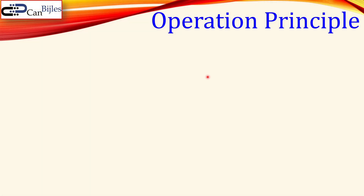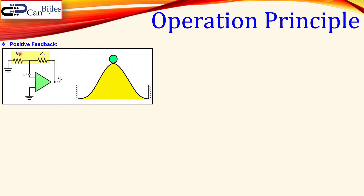Before we jump into our example, let's briefly discuss the operation principle of this Schmitt trigger. We will have a positive feedback, and the positive feedback in general is given by this circuit. We have the positive feedback configuration using a simple voltage divider with two resistors. This is our output voltage VO, and we have both inputs grounded. We have discussed in previous videos that in the positive feedback configuration, an amplifier has a loop gain larger than one.